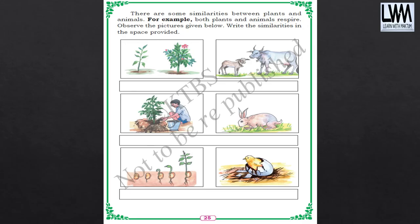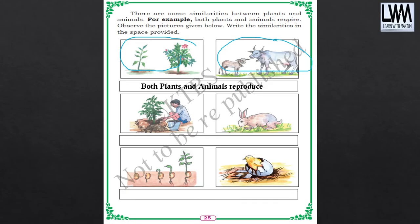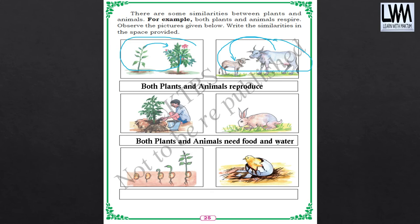Now, there are some similarities between plants and animals. For example, both plants and animals respire. Observe the pictures given below and write the similarities in the space provided. The first similarity: both plants and animals can reproduce — they give birth to young ones of the same kind. In the second set of pictures: both plants and animals need food and water. In the third picture: both plants and animals grow. So these are some of the similarities between plants and animals.